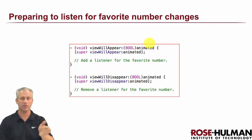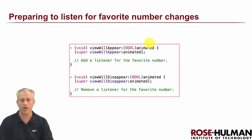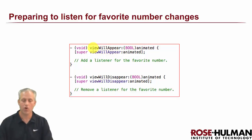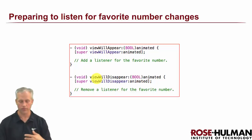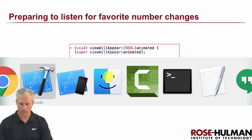You need to always pick a strategy for when you add a continuous observer and when you're going to remove it — it's your responsibility as the programmer to make sure you do that. I'm going to choose in this app to put them on in viewWillAppear and take them off in viewWillDisappear, which is a nice pair that's easy to use.